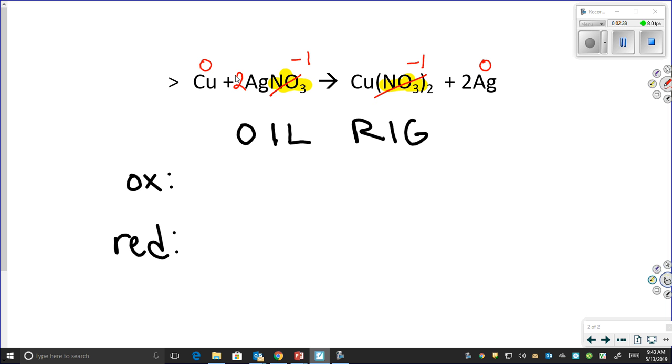My silver, I know, is going to have a plus one charge because of this negative one. Because the compound has to have a total charge of zero, that means my silver is going to be plus one.